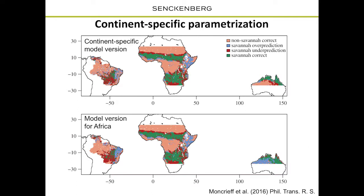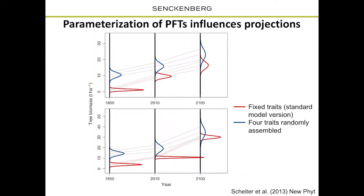We extended this analysis to South America as well. The lower panel shows simulations with the model parameterized for Africa — the original DGVM applied to all three continents — and the upper panel shows newly parameterized model versions for three different continents. For Australia, the agreement between simulated and observed vegetation is now much better: the areas where data and model agree is substantially higher. This really makes a huge difference, highlighting how we parameterize our models.